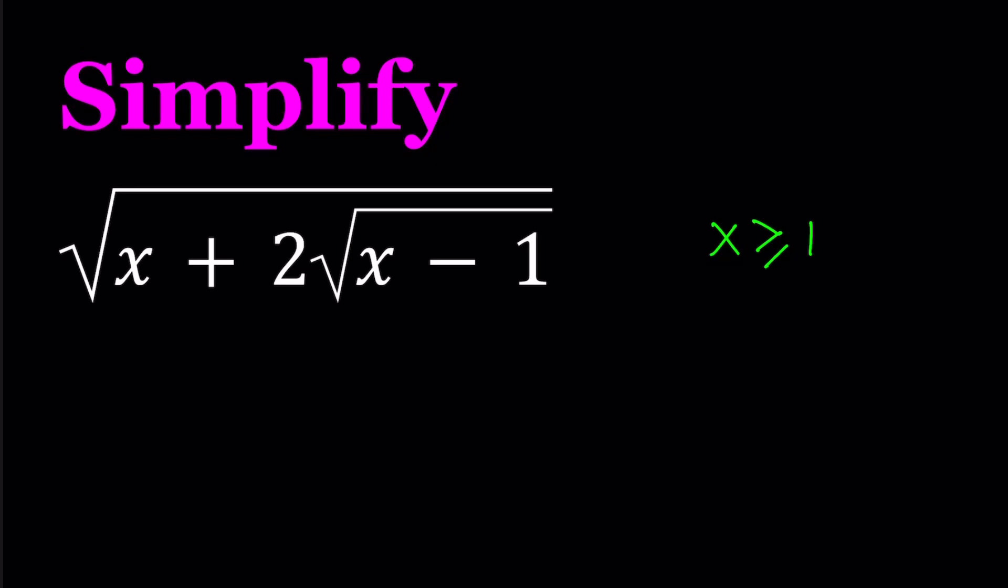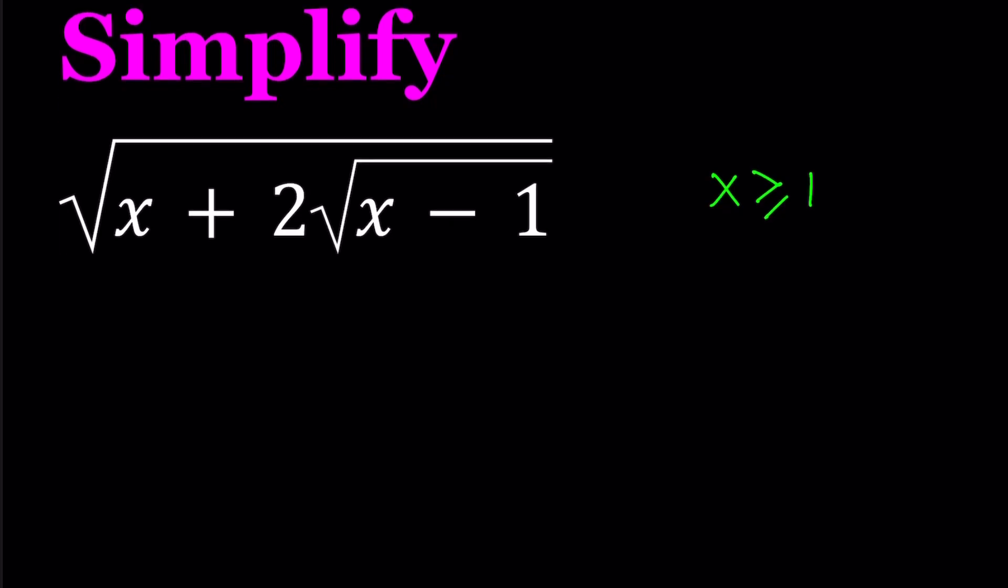So I'm going to do the following. I want to be able to square root this, so this must be the square of something, don't you think? But as is, it doesn't look like a perfect square. So let's make it perfect. How? By observing the following.